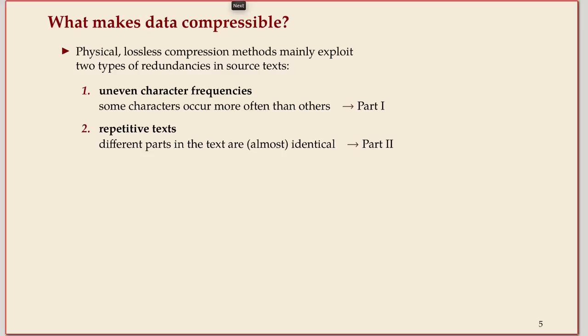If you restrict your attention to physical lossless compression, there's the question of how you could actually compress a text without exploiting anything specific about it. There are two types of redundancies frequently exploited by compression methods. One is that character frequencies are not uniformly distributed. Some characters occur much more often than others, so by encoding frequent characters with fewer bits you can save space overall.